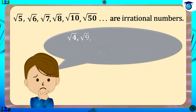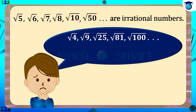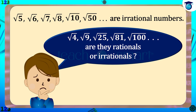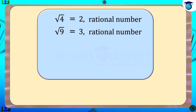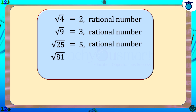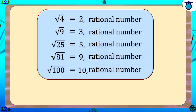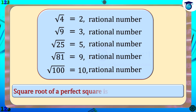But what about √4, √9, √25, √81, √100, etc.? Are they rationals or irrationals? Let us see. √4 = 2, and we know 2 is a rational number, therefore √4 is also a rational number. Similarly, √9 = 3, which is a rational number; √25 = 5, which is a rational number; √81 = 9, which is a rational number; and √100 = 10, which is also a rational number. Hence we can see that the square root of a perfect square is always a rational number.